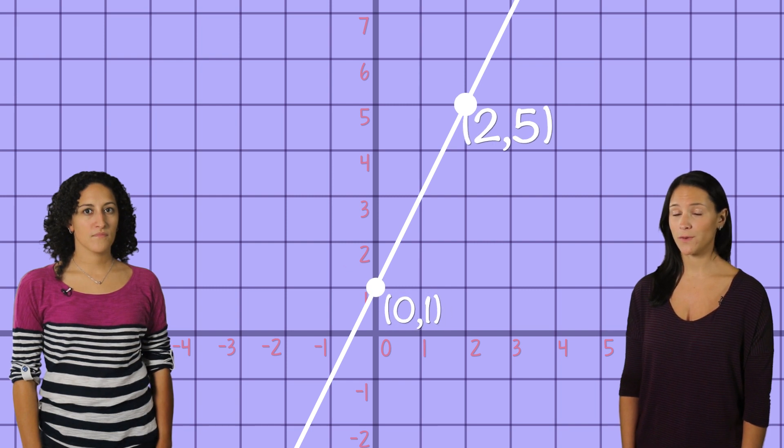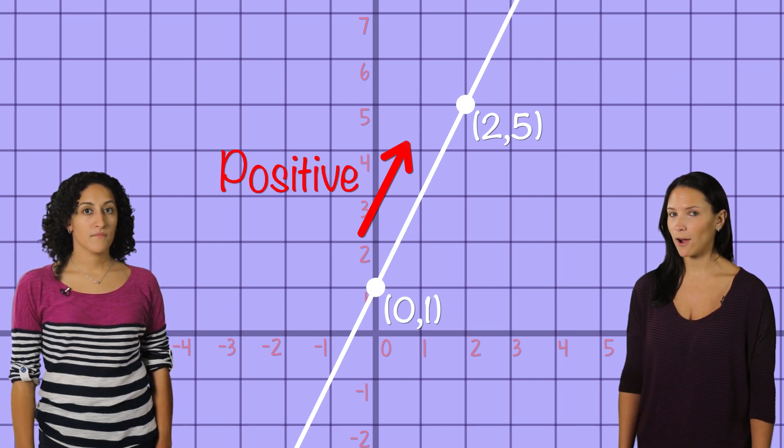Here is a line drawn between points 0, 1, and 2, 5. This line is going up, so right away we know it's positive. And to find the value of its slope, we can just count.